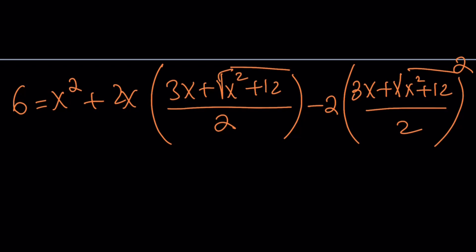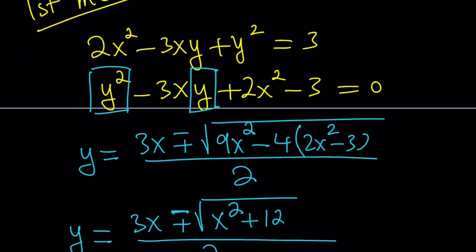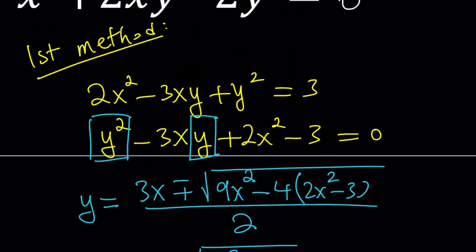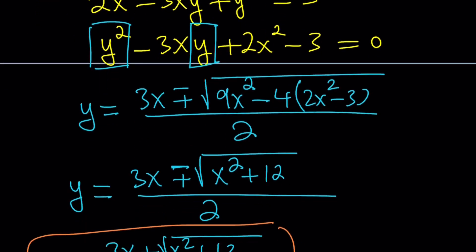But the problem is you have to make sure that all solutions satisfy the original one. What would happen if you went with the minus sign? Then we would get another set of solutions probably but guess what? You have to make sure that they satisfy the original system.